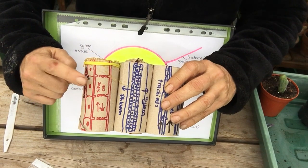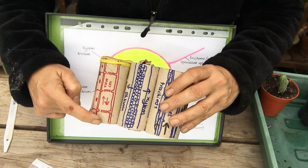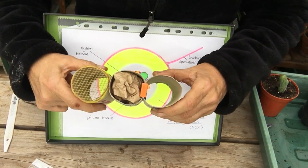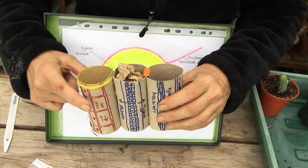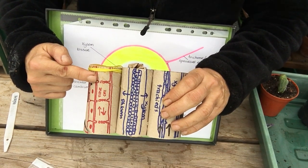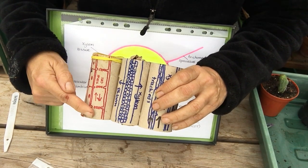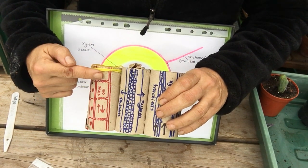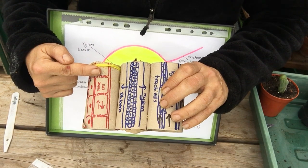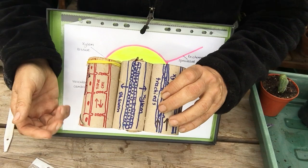And here we have our phloem tissue so this is made of sieve cells end to end called sieve tubes and in between each cell it's perforated. It's not completely broken down like in the xylem, it's perforated. Now the phloem tissue transports sugars in solution and in this case they move in both directions up and down. So the leaves have made sugars and they may transport it down to the root for storage for example, but the sugars are transported all over the plant and used as required.